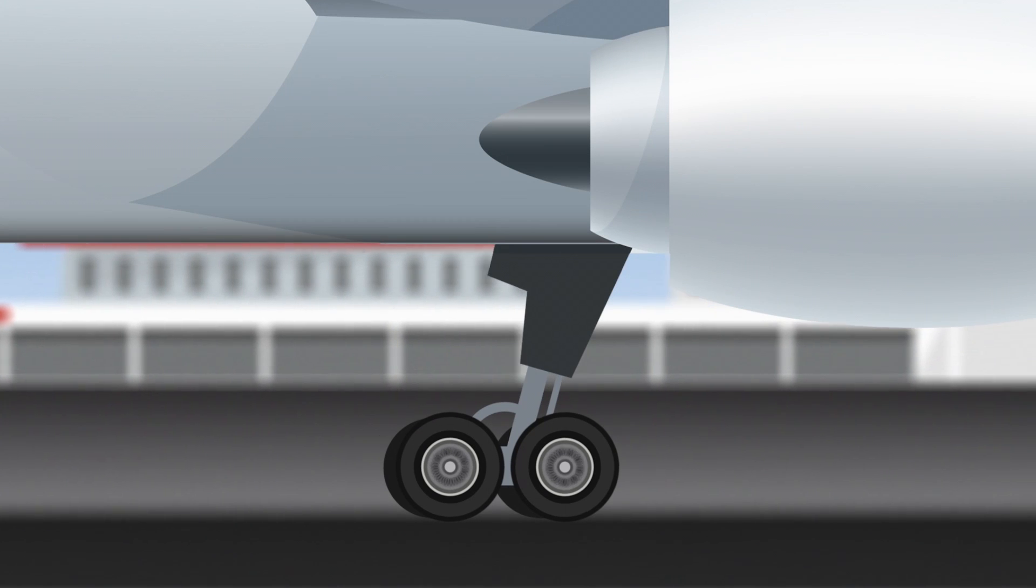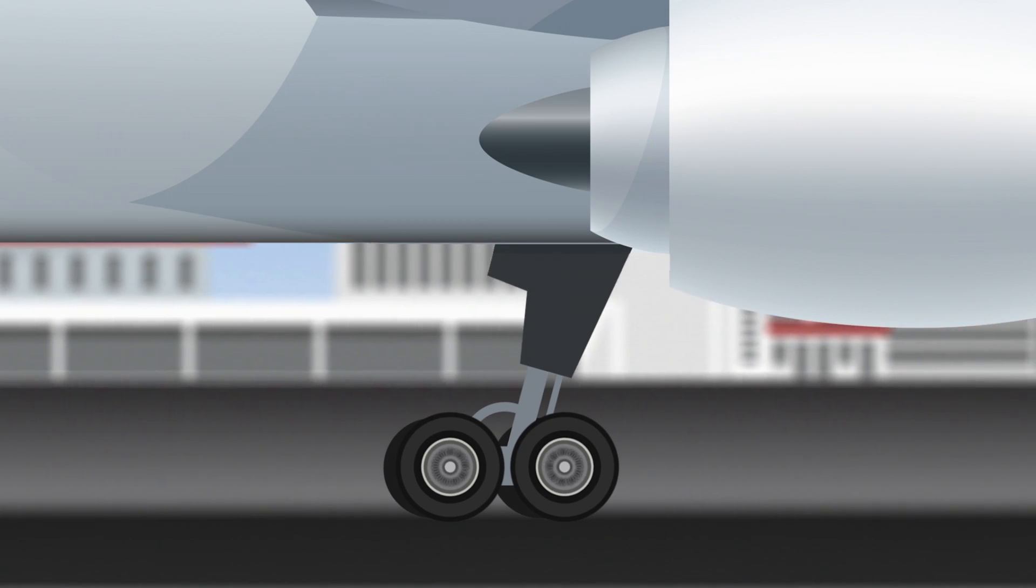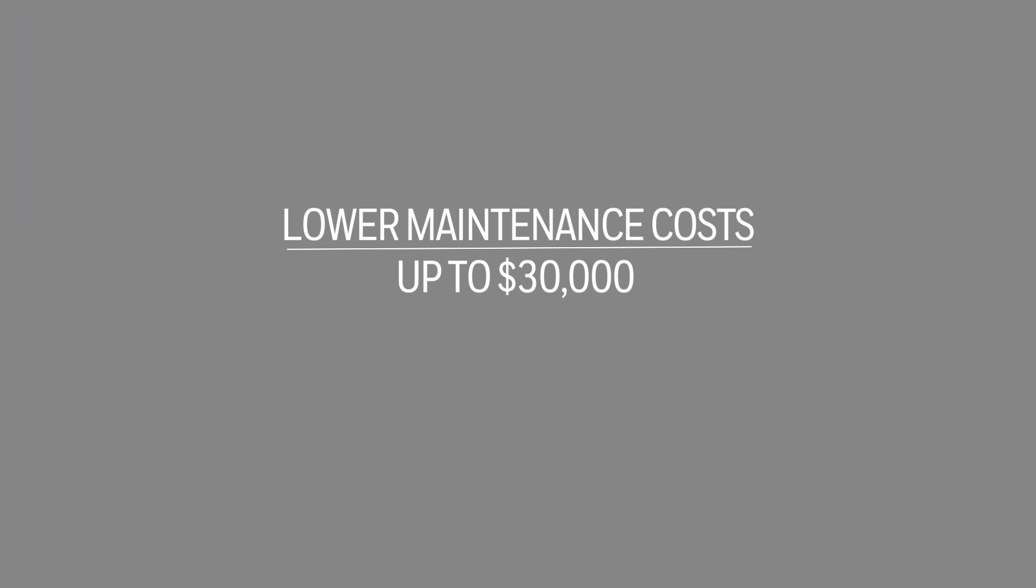Finally, by connecting brakes, auxiliary power, and other components, Abigail can lower maintenance costs up to $30,000 per plane per year and cut inoperative equipment by more than 85%.